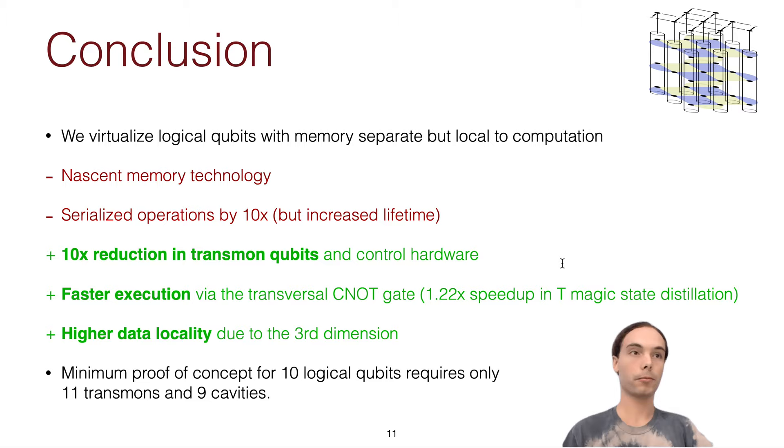Some downsides to point out are that this memory technology is relatively new. It's been shown, it's been proven by David Schuster, but there's still a lot of work to do to improve it to levels of current superconducting devices are. But it's just a few years behind those. And you serialize operations by a factor of 10, but this is just an artifact of using memory. So, but because we use memory, we get a 10x increase in lifetime, so the only effect is that your program takes 10 times longer to run.